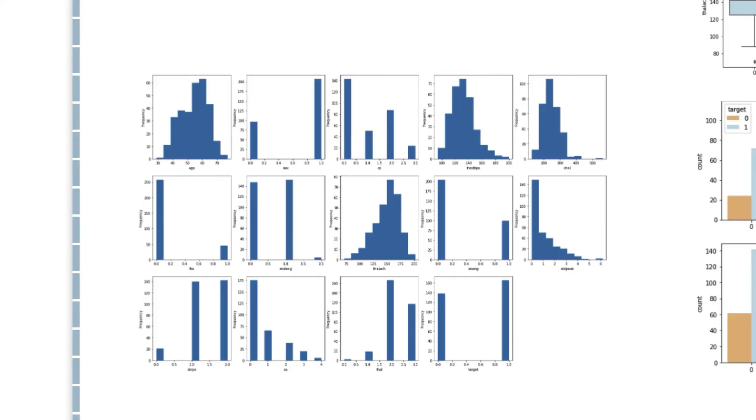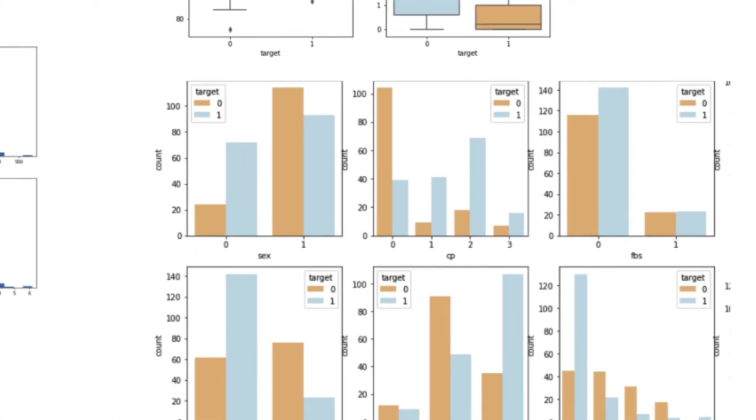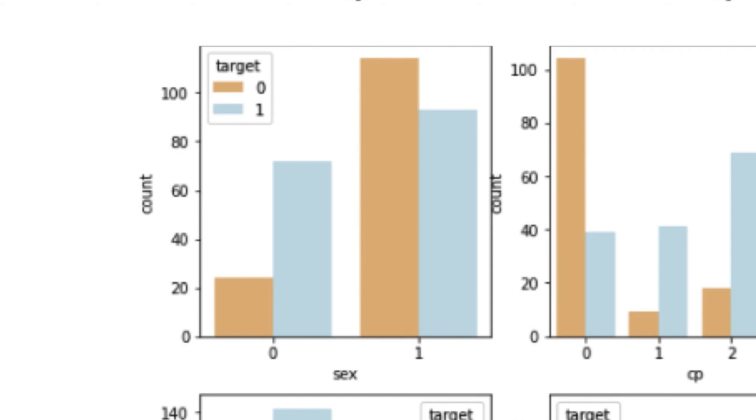To show how categorical value weighs in determining the target value, grouped bar chart is a straightforward representation. For example, sex equals one and sex equals zero have distinctly different distribution of target value, which indicates it is likely to contribute more to the prediction of target.